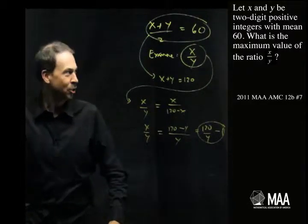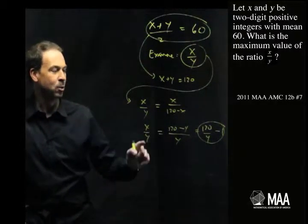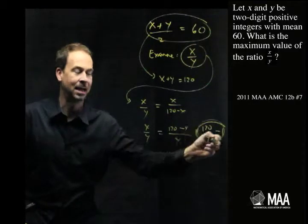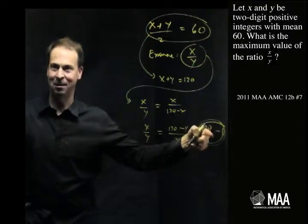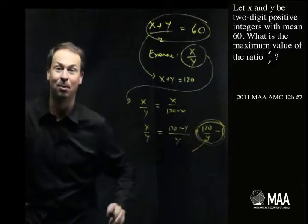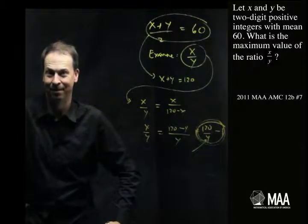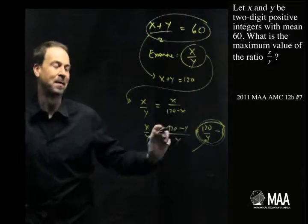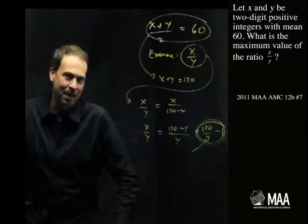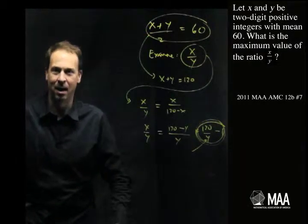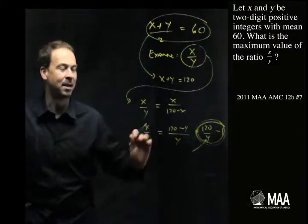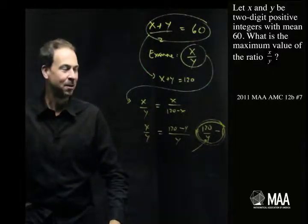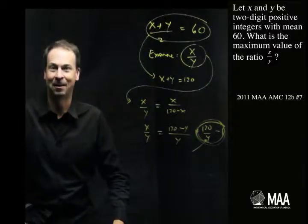So what's the question? Find the maximum value of x over y — find the maximum value of this quantity, 120 over y minus 1. Well, this would be as big as it can be when y is as small as it can be. Now I feel like this question is falling into place. What could y be? What's the smallest possible value for y, and how will that then solve this problem? Give it a try and check your answer with the essay that goes with this video.